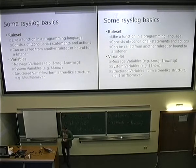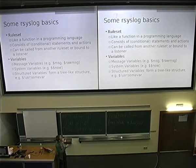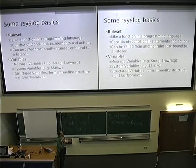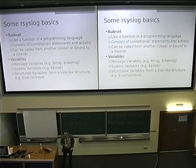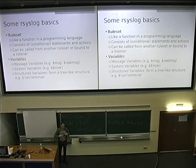A rule set can be nested — it can be called from another rule set, or it can be bound to a TCP listener so that every message that comes in via that port is automatically forwarded to that rule set. We also have variables: the traditional variables that stem from the Syslog RFCs — $MSG, $RAWMSG, $SyslogPriority, and so on. Then a couple of system variables like $$now which gives a current timestamp. And we added tree-like structured variables — in Lumberjack we agreed to use the bang sign as a path delimiter.